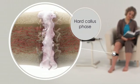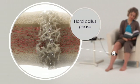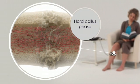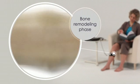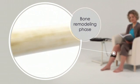The hard callus phase is marked by soft tissue mineralization and fracture gap bridging. At this stage, the fracture is healed. Finally, remodeling of a healed fracture replaces weaker woven bone with stronger cortical bone.